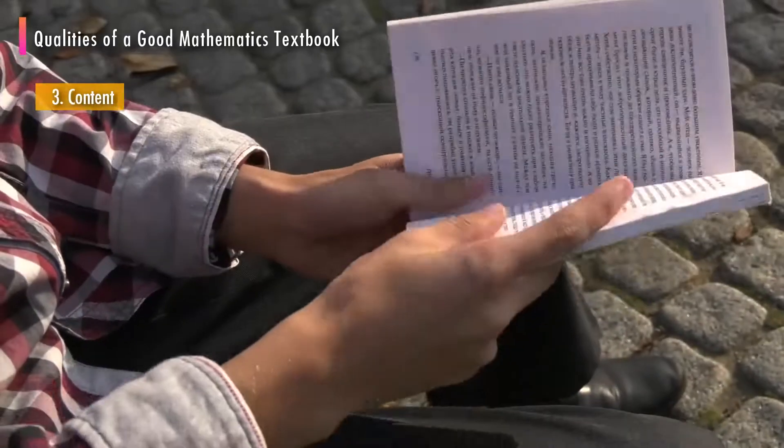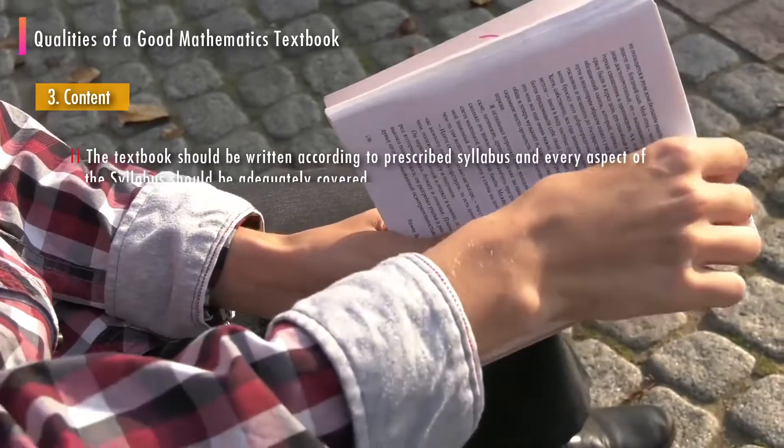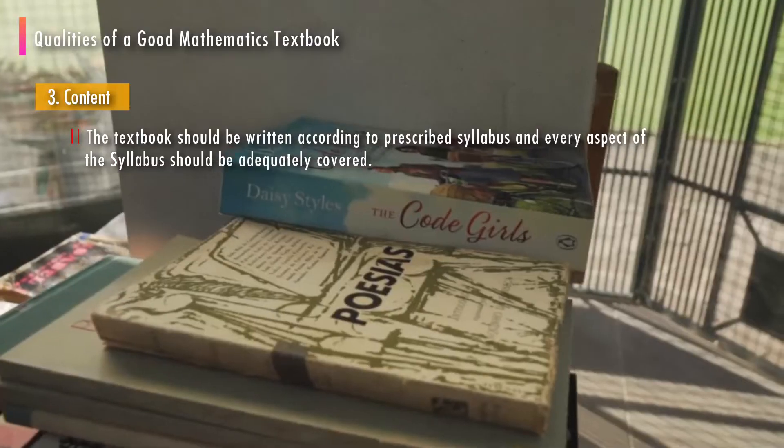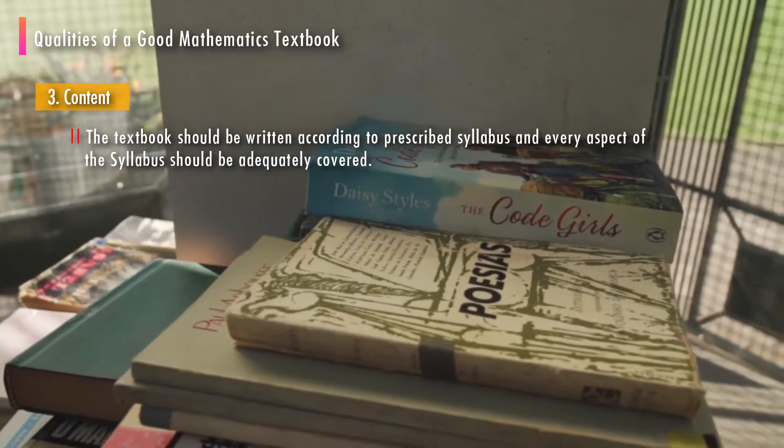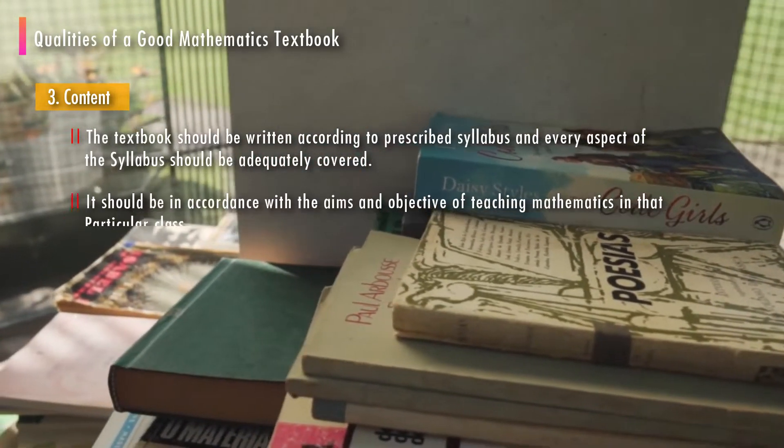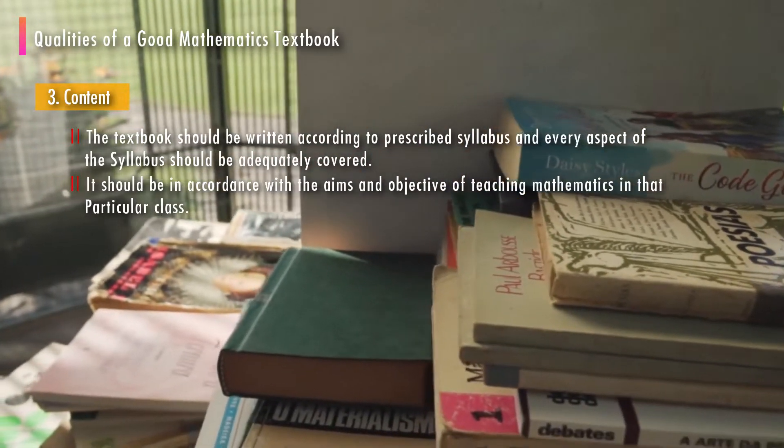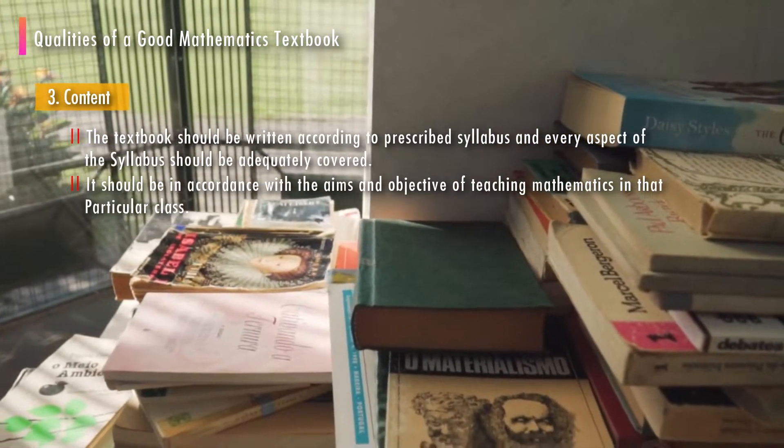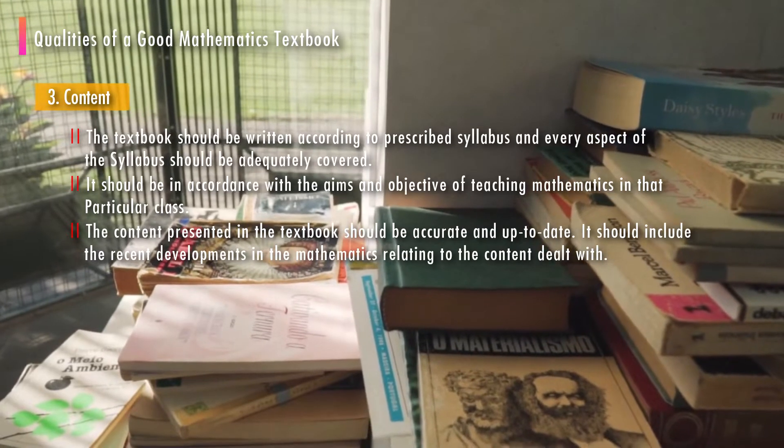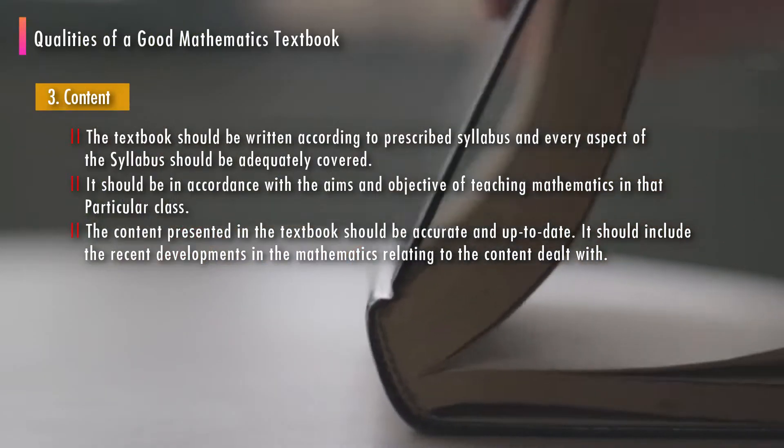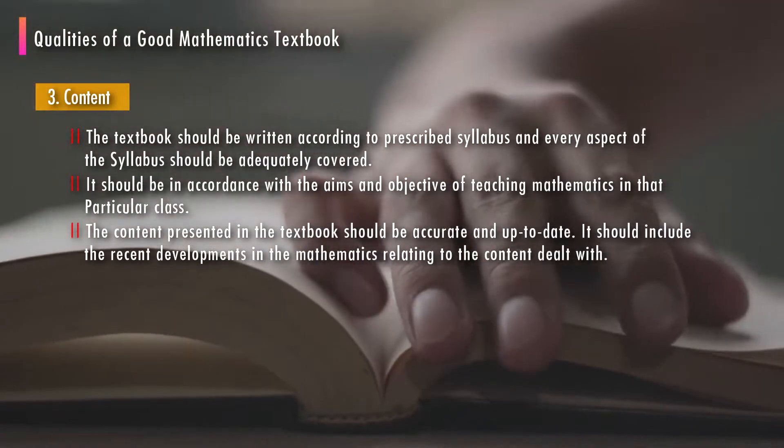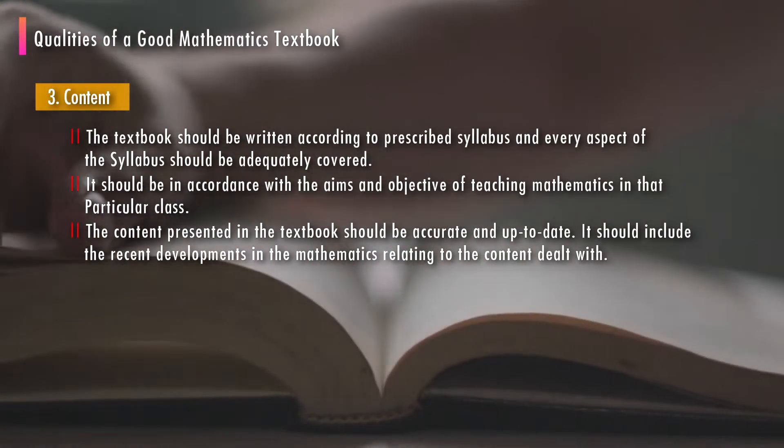The third one is content. The textbook should be written according to the prescribed syllabus and every aspect of the syllabus should be adequately covered. It should be in accordance with the aims and objectives of teaching mathematics in that particular class. The content presented in the textbook should be accurate and up-to-date. It should include the recent developments in mathematics relating to the content dealt with.